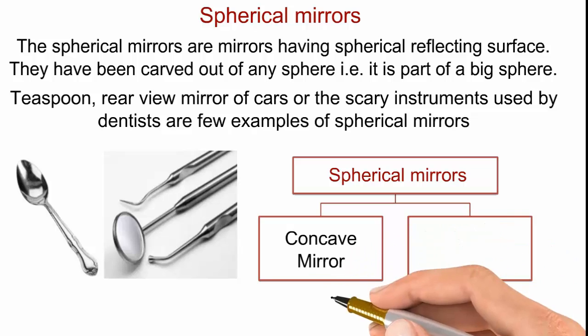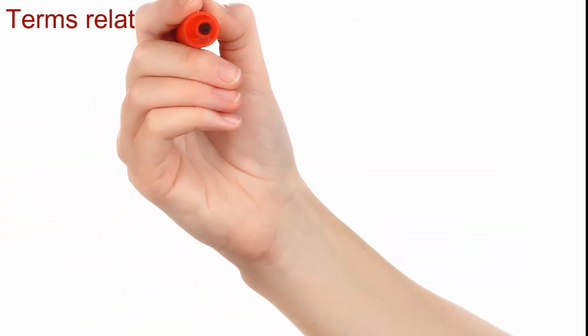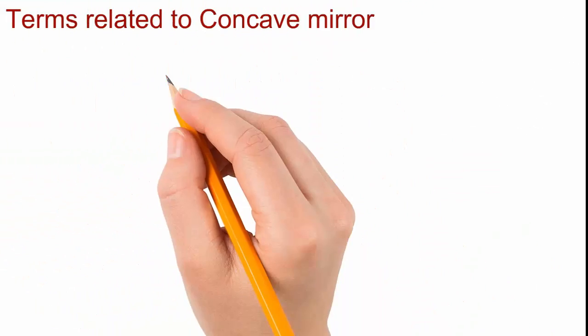We can see such mirrors are very common in our day-to-day life. Example: teaspoon, rear view mirror of cars, and the scary instruments used by dentists. You might have seen that. The spherical mirrors are divided into two categories: concave mirror and convex mirror.